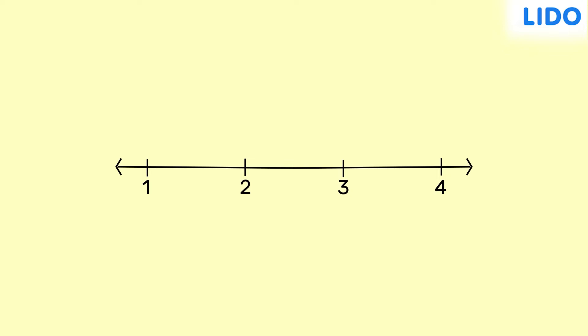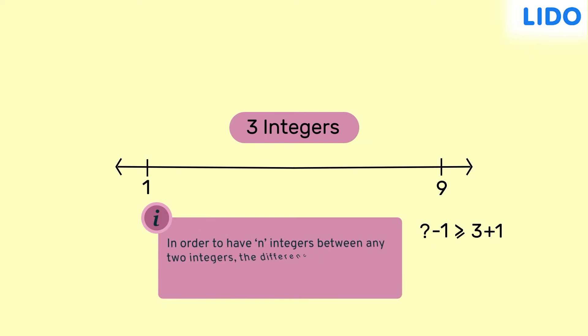But there's a catch. Let's say we need three integers between one and another integer. Then ideally, the other integer should be at least 5, or the difference between the other integer and one should be at least 4, which is 1 more than 3. If we were to generalize this, we can say that in order to have n integers between any two integers, the difference between those integers should be n plus 1.